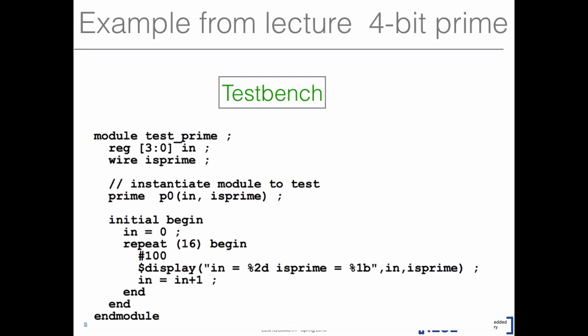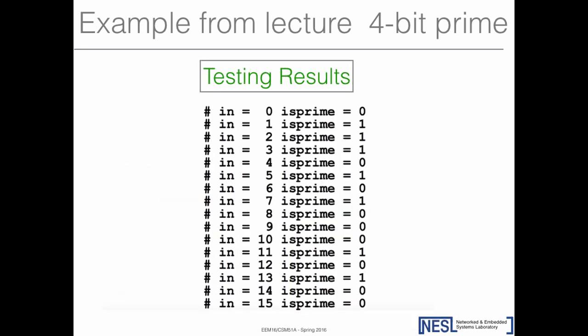For the test bench of the prime detector: initial-begin, set input=0, then use the 'repeat' keyword—'repeat 16' times, increment input by 1, covering all 16 four-bit values. You create an instance called 'p_yield' of the prime module with ports in and is_prime, and use 'display' (similar to 'monitor') to print the input value and the output is_prime. When input=0, is_prime=0; when input=1, is_prime=1—matching expectations.